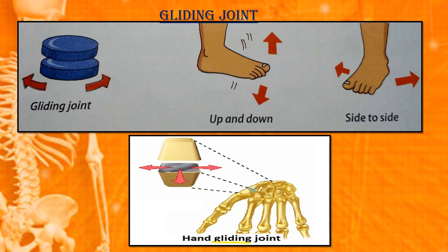Gliding joint. Bend your foot at the ankle. You can move it in two ways as shown in the picture: up and down and side to side. This type of joint, which allows the bones to slide over each other, is called the gliding joint. This type of joint is found in the bones of the wrist and ankle.